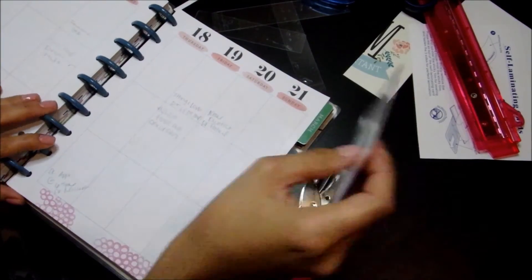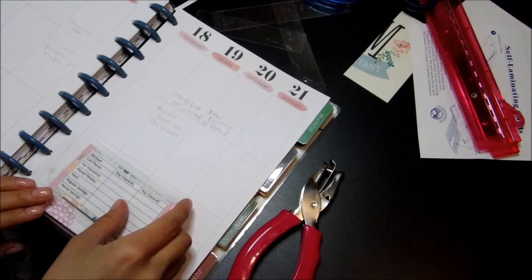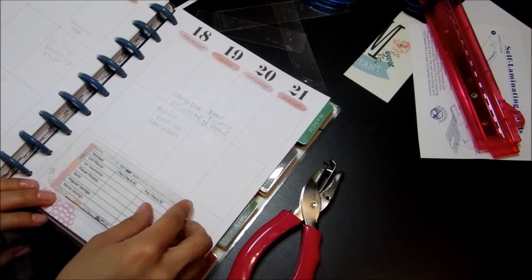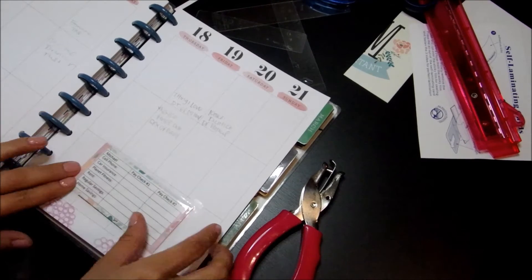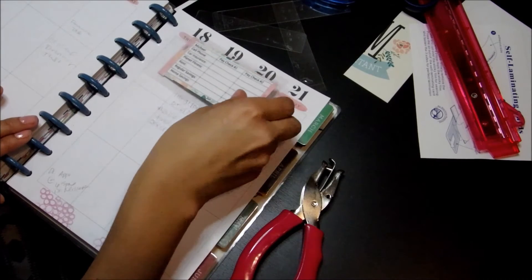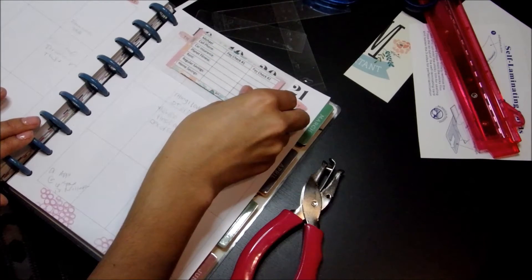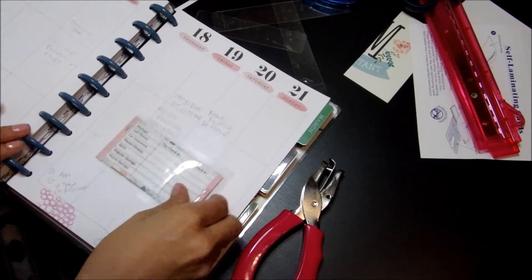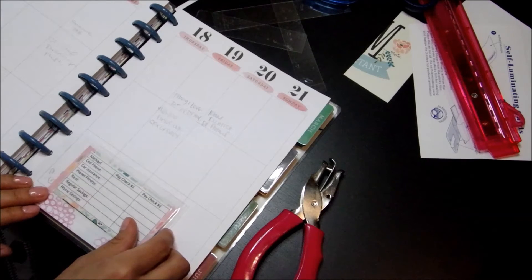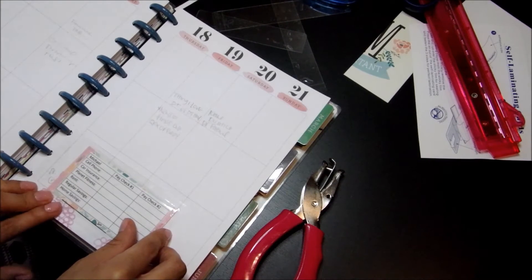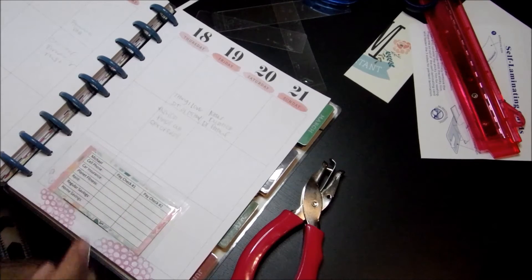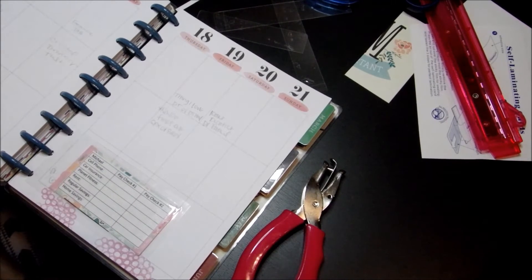So before I put the punch holes in I'm going to go into my happy planner and kind of decide where I want this to be. I think I want it to be at the bottom just because your holes would be different wherever you put them. If you put it on top it'd be a little bit different in the middle it'd be different and at the bottom it would be different. So I think I'm going to go ahead and put them right here. So I'm going to go ahead and dot where I want to have them.